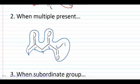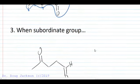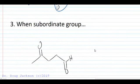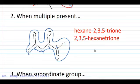But let's put the name together here. No stereochemistry in this compound. We have hexane-2,3,5-trione.